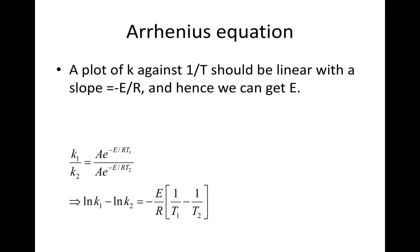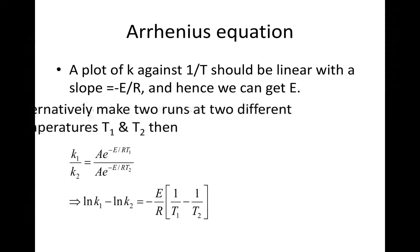Let's look at the Arrhenius equation in a bit of detail. A plot of K against 1 over T should be linear with a slope minus E over R, and hence we can get E, the activation energy.